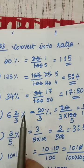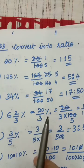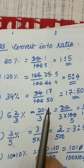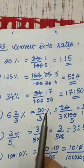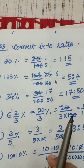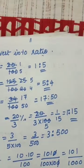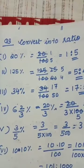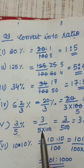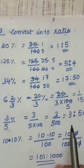6 and 2 by 3 percentage: convert into improper fraction, which is 20 by 3 percentage. Percentage means divided by 100. Most children forget to put the percentage sign. Cut out and you get 1 by 15, that is 1 ratio 15. Next is 3 by 5 percentage: divided by 100 gives 3 by 500. You cannot cut out, so it is 3 ratio 500.